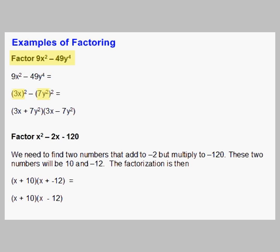So we can rewrite a² - b² as (a + b)(a - b). In this case, our a is 3x and our b is 7y². So we get (3x + 7y²)(3x - 7y²).